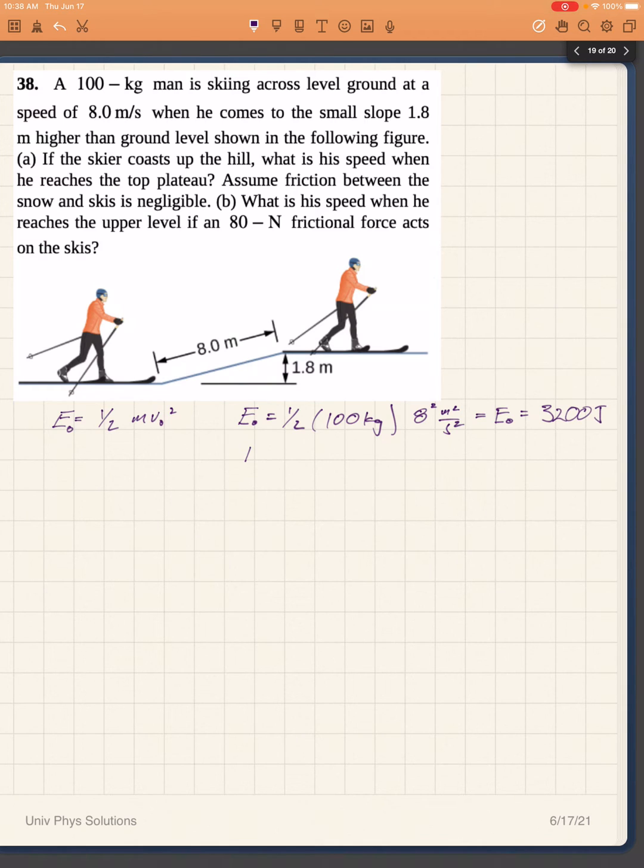This energy will be conserved, so E₀ has to be equal to E final. E final will be the kinetic energy of the man at the top of the slope plus the potential energy he has acquired. Therefore we would have that 3200 Joules must be equal to one half times 100 kg times his final velocity squared, plus his mass times gravity times the height of 1.8 meters.